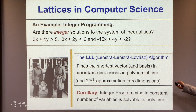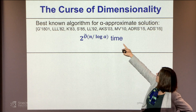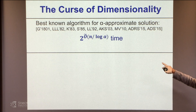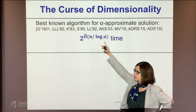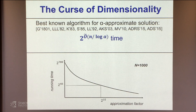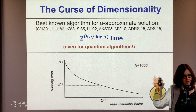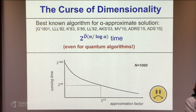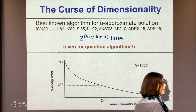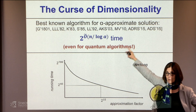The best algorithm when we don't restrict dimensions, but allow n to grow, for alpha approximation, runs in exponential time. So the running time is exponential, which is not great, but it is interesting that this holds even for quantum algorithms. Whereas a lot of famous problems in number theory — factoring, discrete log, elliptic curve log — can be done very quickly on a quantum computer, we have no idea how to beat this on a quantum computer.